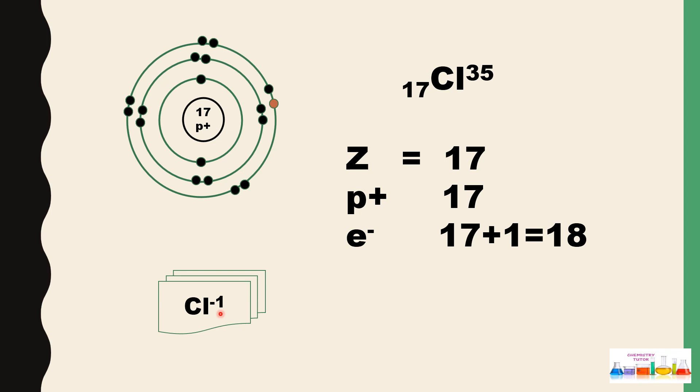So -1 will appear on chlorine. Now negative charge is more compared to positive charge in chlorine. That's why negative charge will appear on the chlorine.